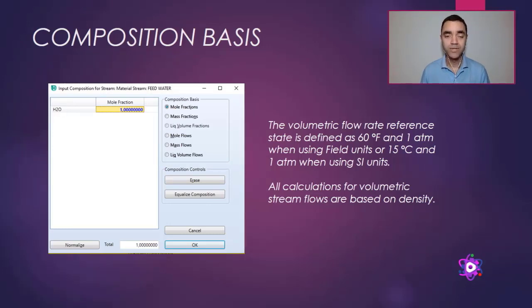Every time you define a stream as liquid volume flow, Aspen Plus performs a calculation based on the mass density of the components. But mass density is a function of pressure and temperature, so Aspen Plus needs a reference to perform this calculation.